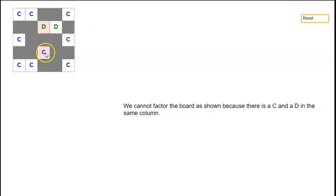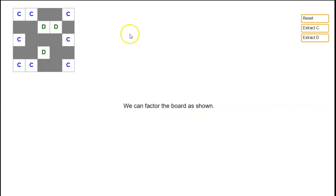Here we've got a D and a C in the same column, and that's not allowed. We're supposed to be dividing into two groups such that any two squares in the same column are in the same group, so we have to make this one group D as well. Now we're OK — every row is either purely C or purely D, and every column is either purely C or purely D. That's the condition under which we can apply this factoring theorem.